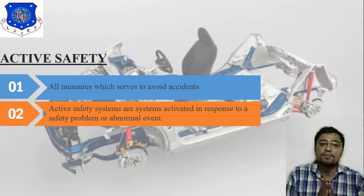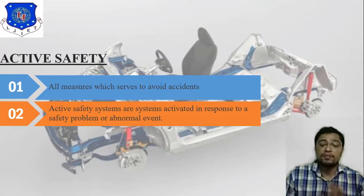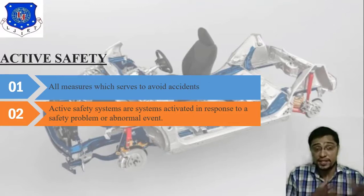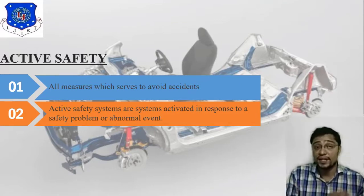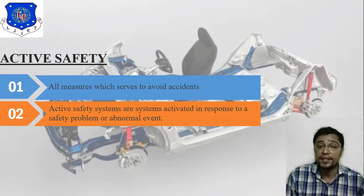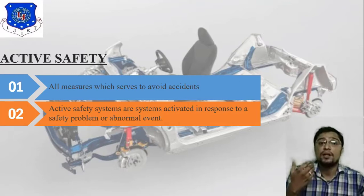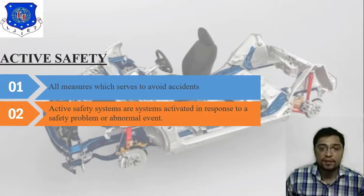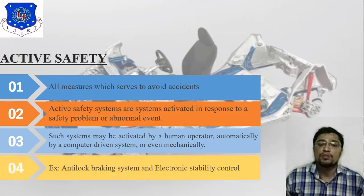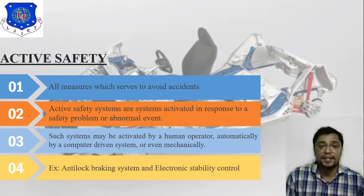Active safety systems are systems activated in response to a safety problem or abnormal event. We need to simulate our model in ANSYS, understand different forces acting on that particular car or four-wheeler, and based on that we consider different spare parts like crumple zone and airbag. A third point: such a system may be activated by a human operator, automatically by a computer-driven system, or even mechanically.